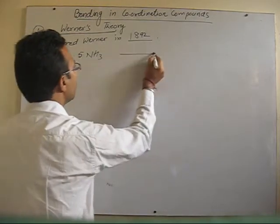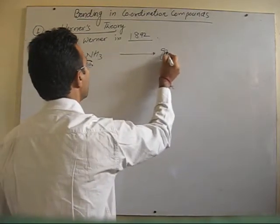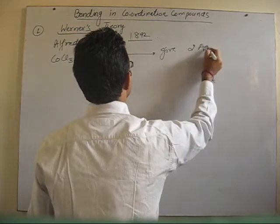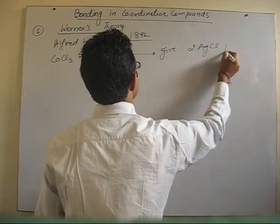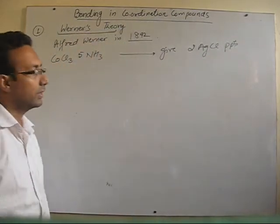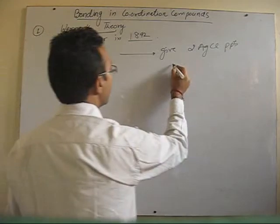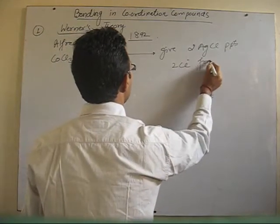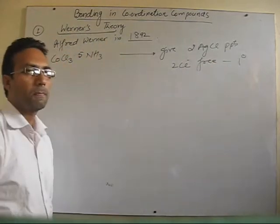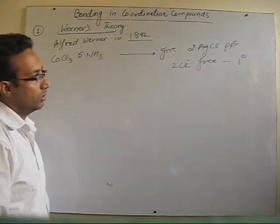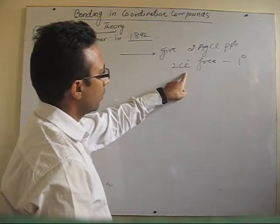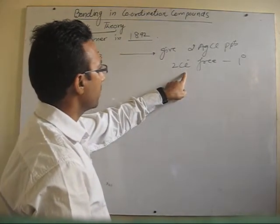This compound is formed to give 2 AgCl precipitates — 2 moles of AgCl. That means it should have 2 Cl⁻ which are free, satisfying primary valencies.